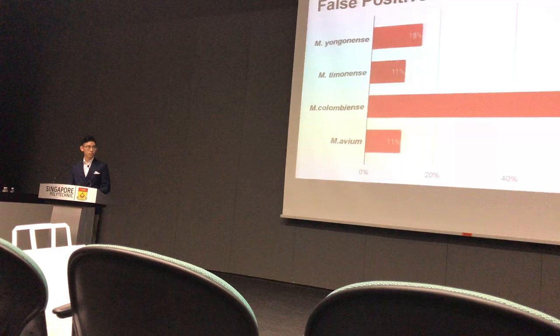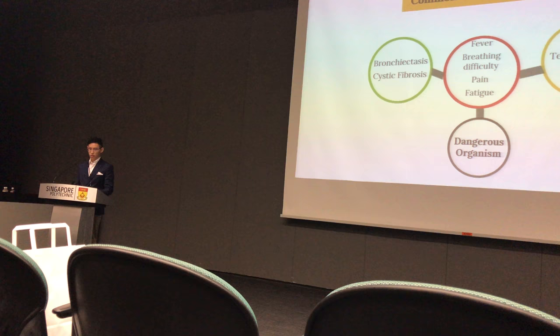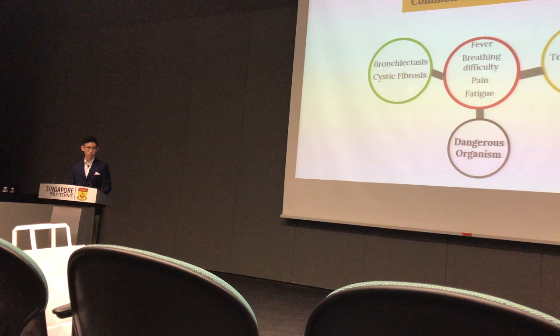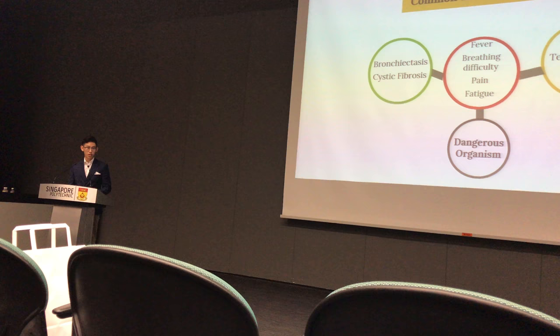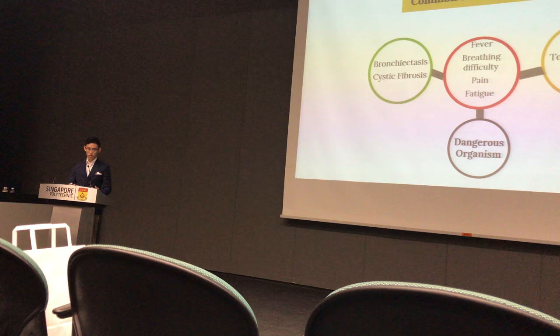Looking at the distribution of false positive results, Mycobacterium colombiense was the most prevalent, followed by Mycobacterium yongonense, timonense, and then avium. Mycobacterium avium complex can cause a number of diseases, such as worsening of pre-existing conditions including cystic fibrosis and bronchiectasis, or even causing diseases on their own such as tenosynovitis and synovitis. Bronchiectasis is characterised by thickened, inflamed, and widened bronchi, causing a build-up of mucus that traps bacteria leading to infections. Cystic fibrosis is characterised by excess production of mucus in the airways, clogging it and trapping bacteria that can lead to pulmonary failure or predispose patients to pneumonia.